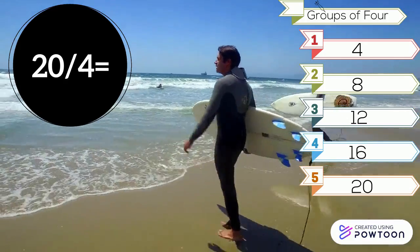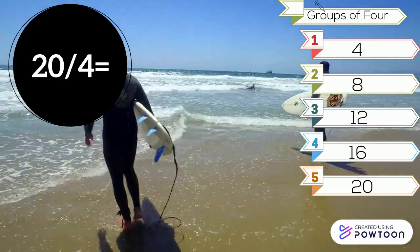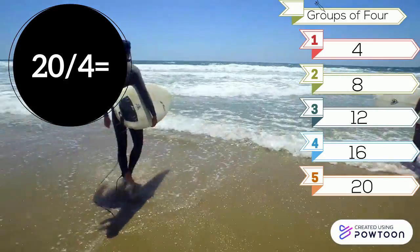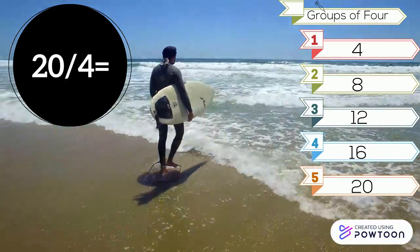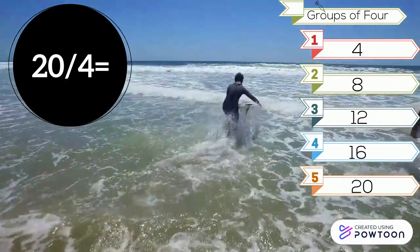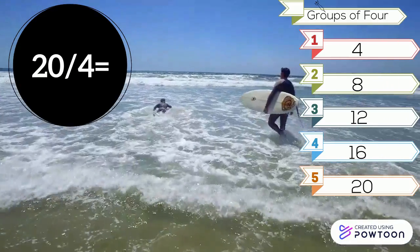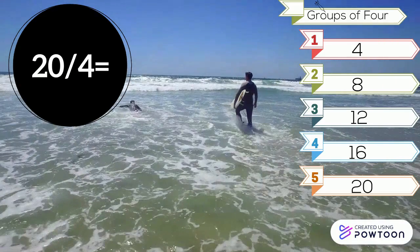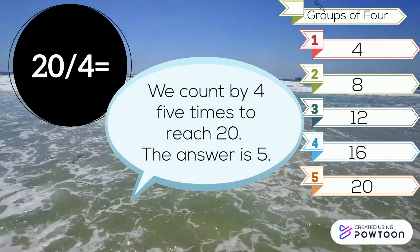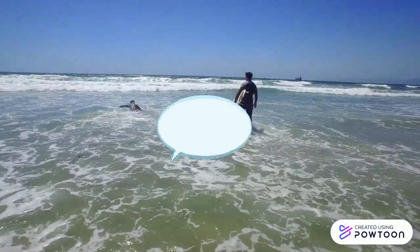20 divided by 4. Look at the groups of 4. One group is 4, 2 is 8, 3 is 12, 4 is 16, 5 groups is 20. We count by 4 five times to reach 20. The answer is 5.